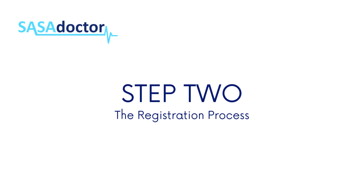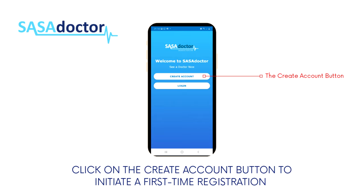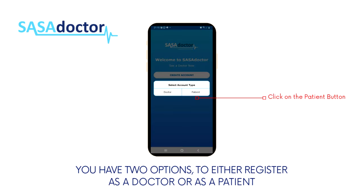Step 2: Registration. Here is how to register on the SasaDoctor application. Click on the create account button to initiate a first time registration. You have two options to either register as a doctor or a patient. Click on the patient button.